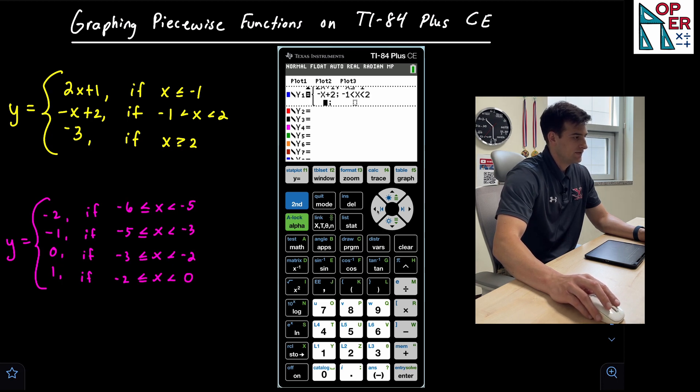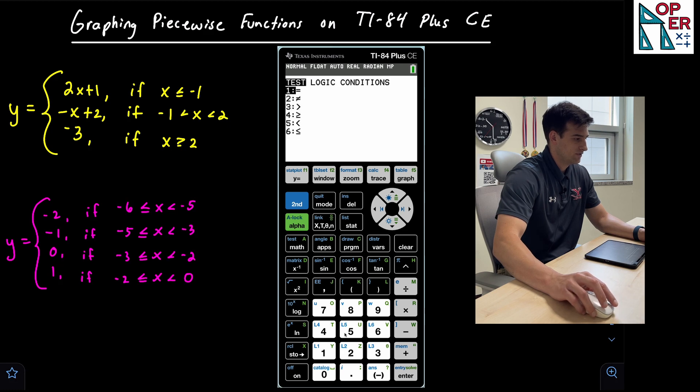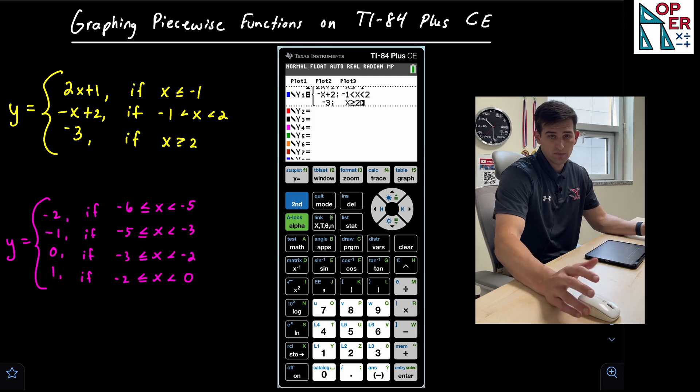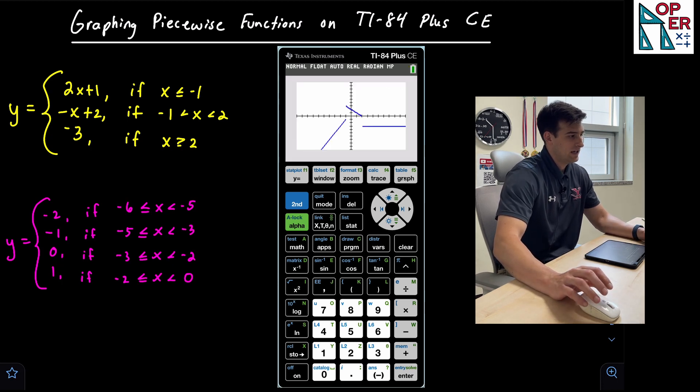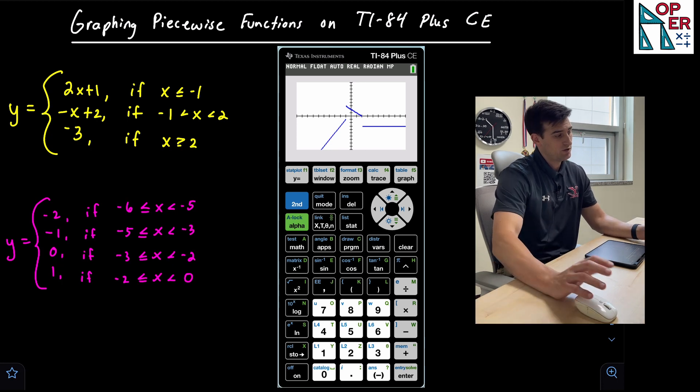And now we're gonna go down and left to type in our final piece, which is just negative three. And we go right, and now we have X is greater than or equal to, so option four here. And this would be positive two. So now once we have this, we have all of our information typed in, we can hit graph, and it shows us our three pieces. Okay, so that's example number one.